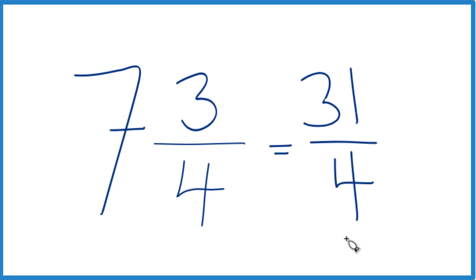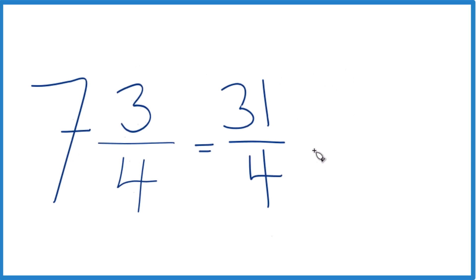If you want to check your work, you can do it this way. 4 goes into 31. Let's see, 4 times 7, that's 28, and there'd be 3 left over. Bring the 4 across here, and we get 7 and 3 fourths. That's the same thing we got before, so we know we did this correctly.